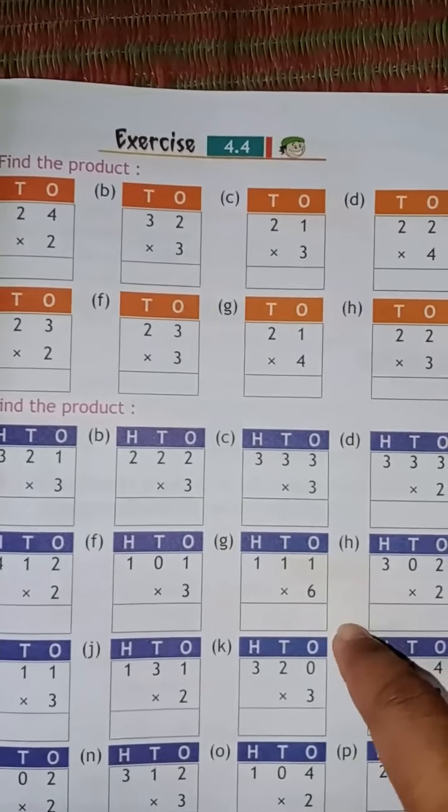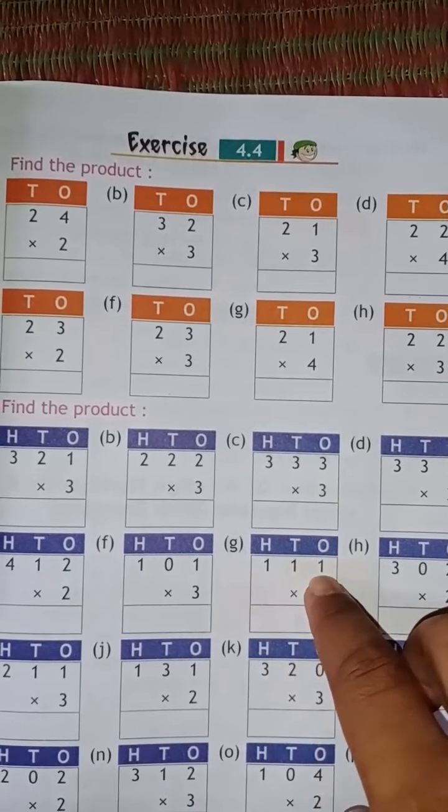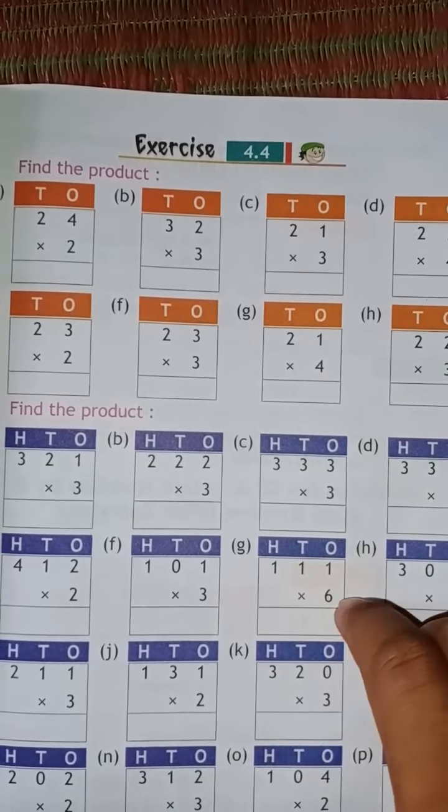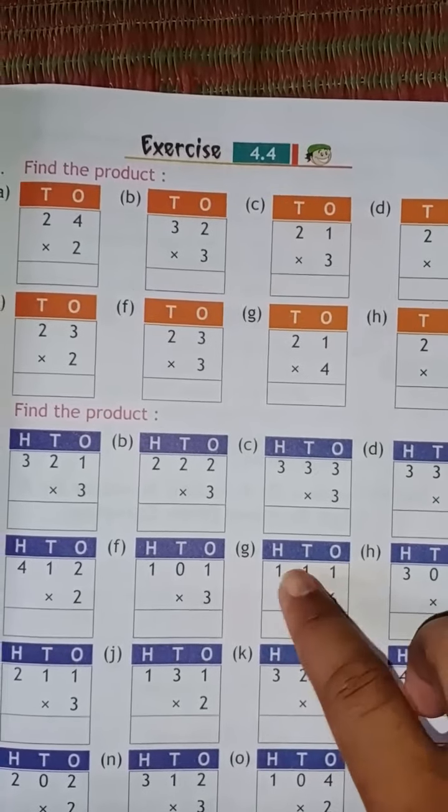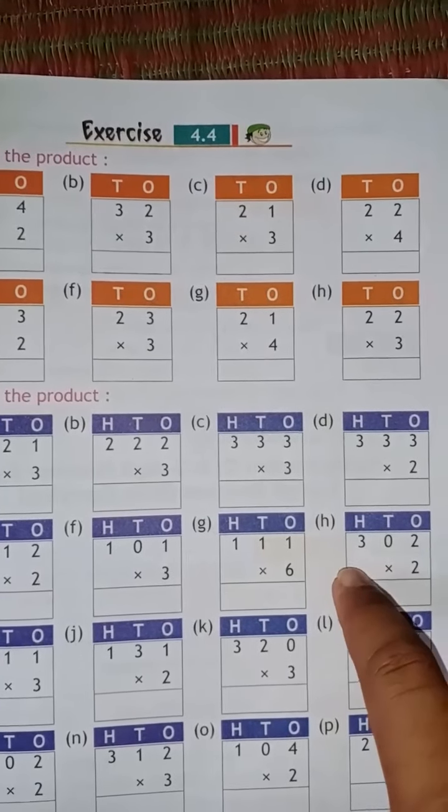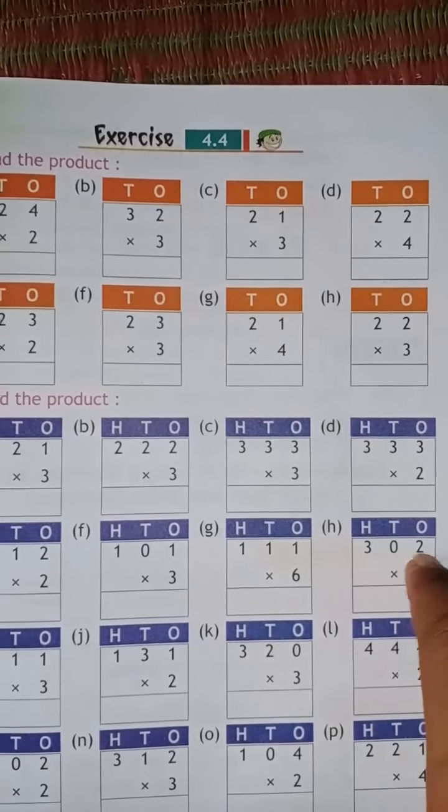Nine hundred ninety-nine. Here on problem d: 3, 3, 3 multiplied by 2 equals 2, 3, 0, 6. 2, 3, 0, 6 equals six hundred sixty-six. Answer.